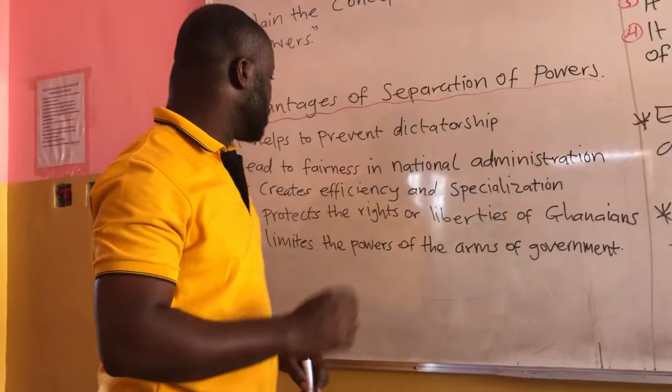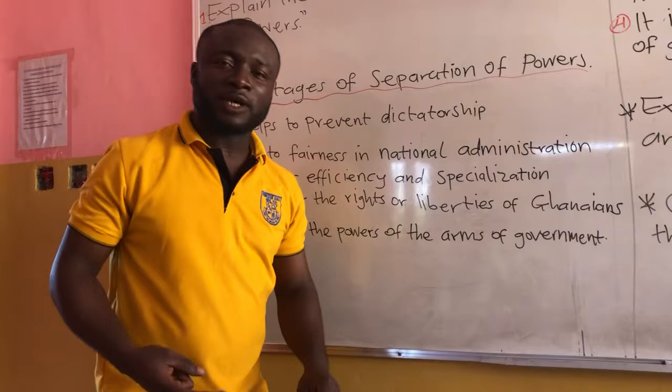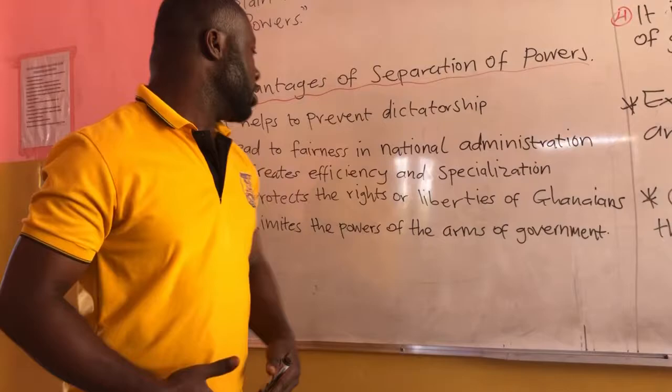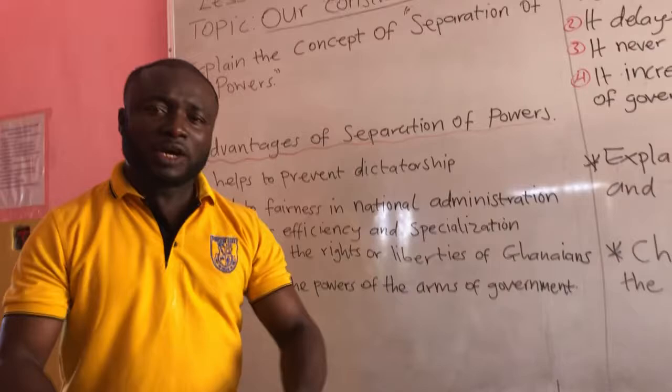Another advantage is that it leads to fairness in national administration. Since the executive is performing its powers, the judiciary is performing its powers, and the legislature is performing its powers, there is fairness in the administration of the country. It also creates efficiency and specialization. The judiciary is always interpreting the law and the constitution of Ghana, so judges become specialized in interpretation of laws.